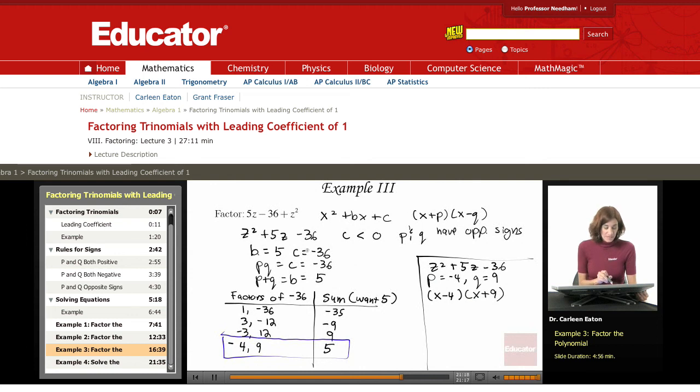So again, find b, find c. Find the factors of c and determine which one has a sum that equals b. And then go ahead and put it in your factored form. Use the p and the q to put it in factored form.